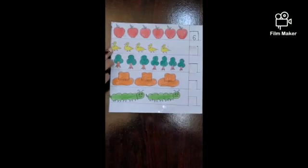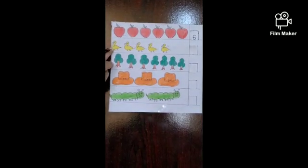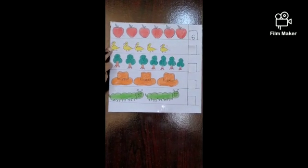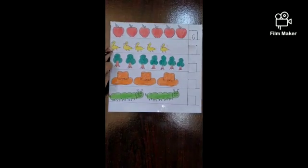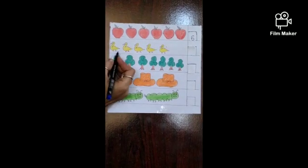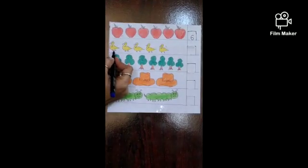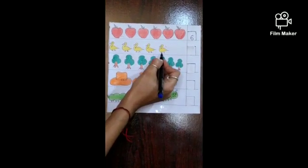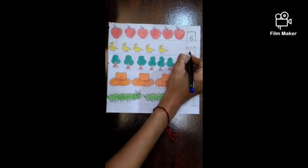Now which picture is this? Duck. What duck says? Duck says quack quack. What is the color of the duck? Yellow color. Now count it. How many ducks are there? 1, 2, 3, 4, 5.